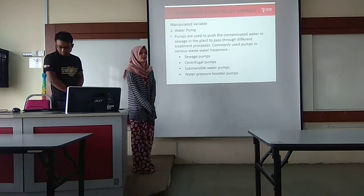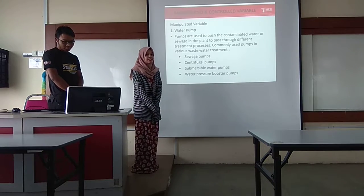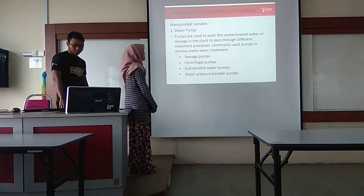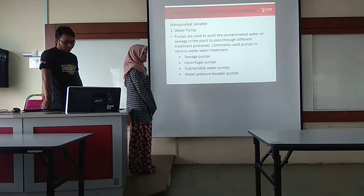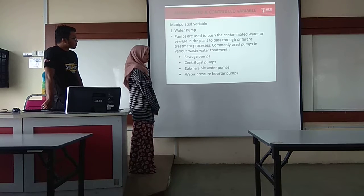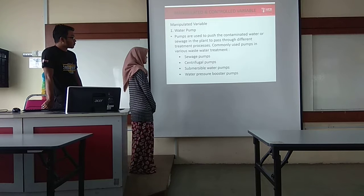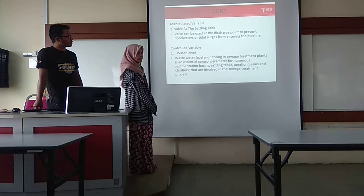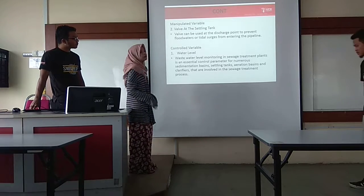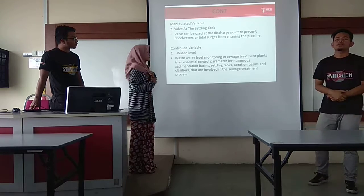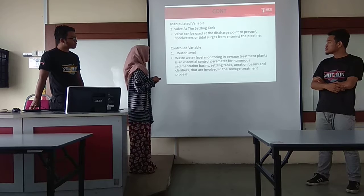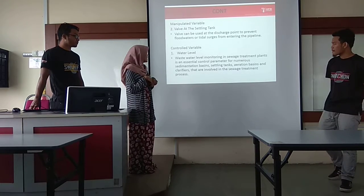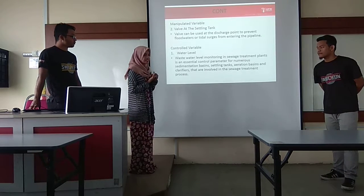I will explain about manipulated and controlled variables for this drainage system. For the manipulated variable, first is the water pump — pumps are used to push the contaminated water or sewage through different treatment processes. Commonly used pumps include sewage pumps, centrifugal pumps, submersible water pumps, and water pressure booster pumps. The second manipulated variable is the valve at the settling tank, which can be used to prevent water from entering the pipeline. For the controlled variable, water level monitoring in the sewage treatment plant is an essential control parameter for the sedimentation facing, settling tank, aeration basin, and clarifier.